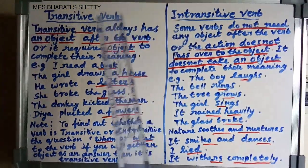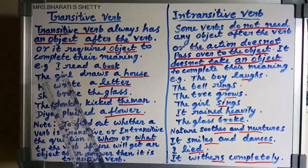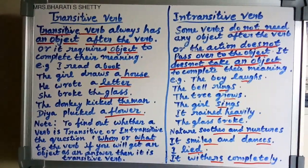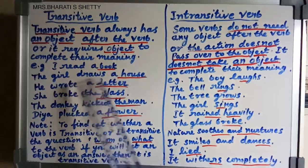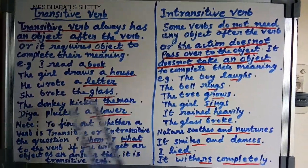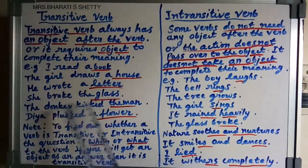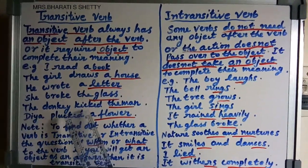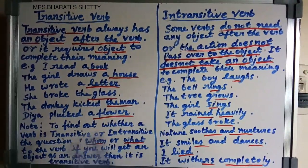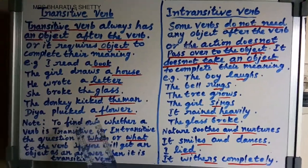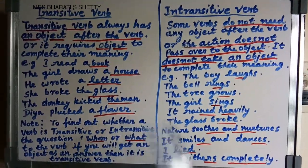Now see examples. I read a book. The girl draws a house. He wrote a letter. She broke the glass. The donkey kicked the man. They plucked a flower.